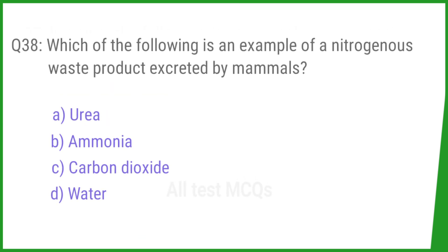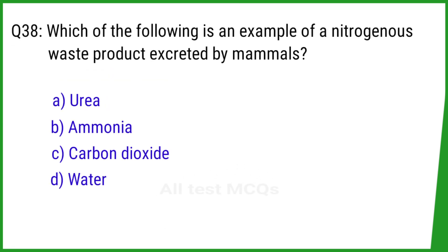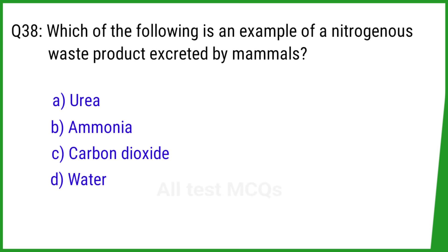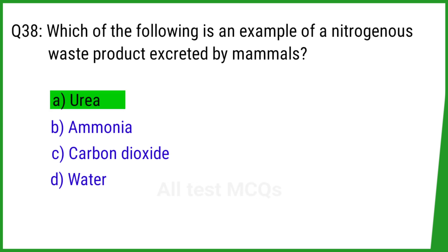Question number 38. Which of the following is an example of a nitrogenous waste product excreted by mammals? The right answer is option A: Urea.